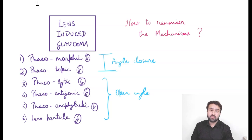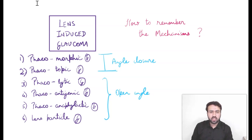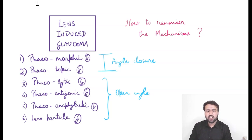There are six terms that you need to pay attention to — these are the phacogenic glaucomas, the lens-induced glaucomas. The six terms are phacomorphic, phacotopic, phacolytic, phacoantigenic, and phacoanaphylactic, which are the same, and then lens particle glaucoma. The first two are secondary angle closure glaucomas, and the last three are secondary open angle glaucomas.